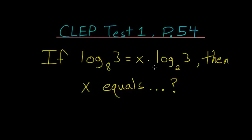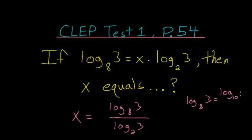is to just divide everything by this log base 2 of 3. So we'd have that x is equal to log base 8 of 3 divided by log base 2 of 3. The way to enter logarithms into a calculator that isn't base 10 or base e is to know this rule, that you can rewrite log base 8 of 3 as a quotient of two logarithms with the same base. So let's use base 10 in this case. We'll have log base 10 of 3 divided by log base 10 of 8.